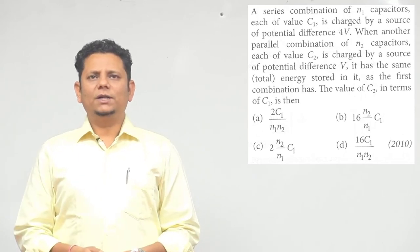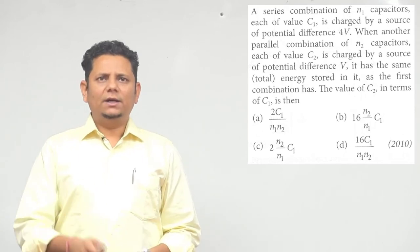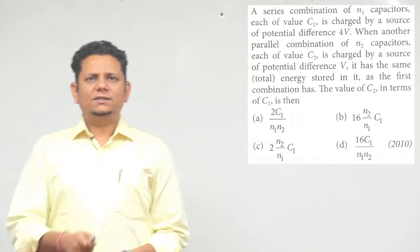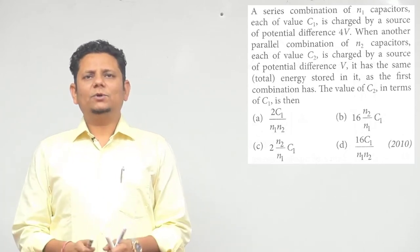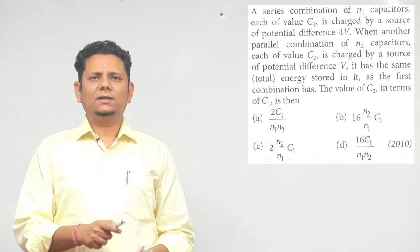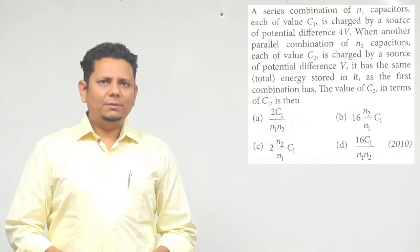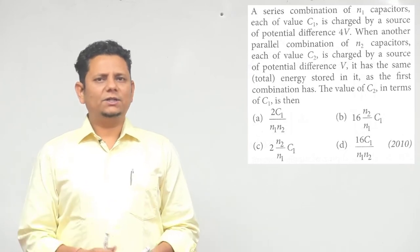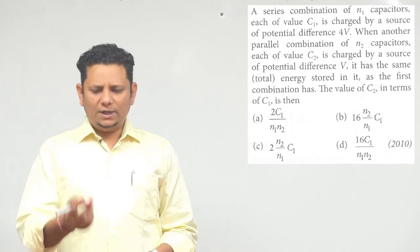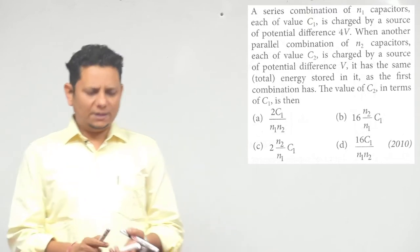When another parallel combination of N2 capacitors, each of value C2, is charged by a source of potential difference V, it has the same total energy stored in it as the first combination. Now we will find the value of C2 in terms of C1.